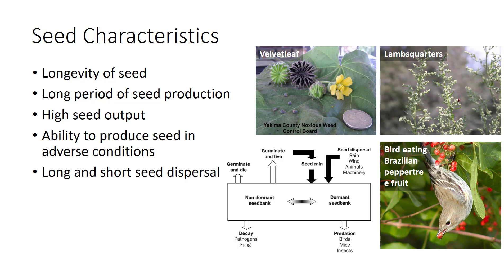Some weedy species produce seed for an extended period of time, and many weed species can produce thousands of seeds on a single plant. Lamb's quarters have been known to produce 176,000 seeds per plant. Weeds can also find success by producing seeds even under adverse environmental conditions. Weeds have developed various effective ways of spreading their seeds, with different species using different techniques to spread seeds either short or long distances, such as this bird eating a Brazilian pepper tree fruit, which can also float and be dispersed through water.